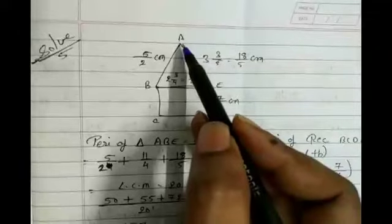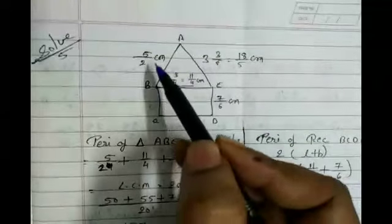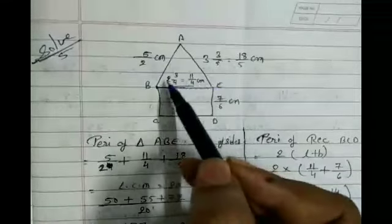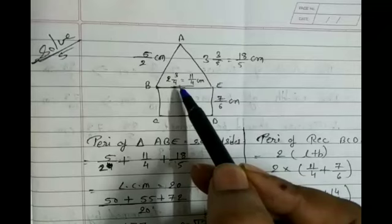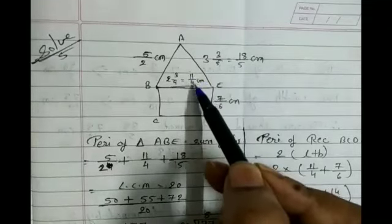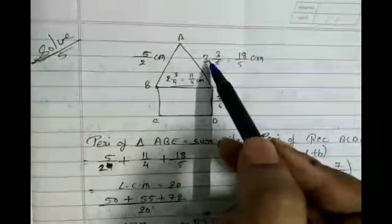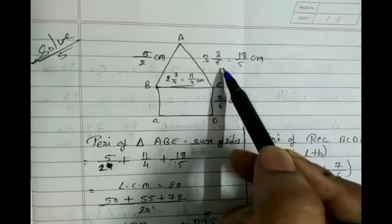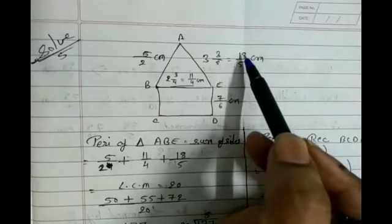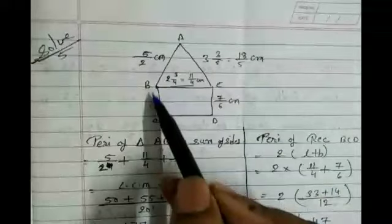In triangle ABE, side AB is given as 5/2 cm. Side BC is given as 3 and 3/4 cm, which we convert to the simple fraction 11/4 cm. Side EA is given as 3 and 3/5 cm, which converts to 18/5 cm.